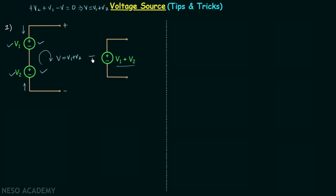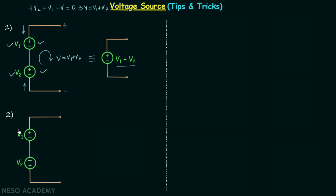This single source is the equivalent of the two-source arrangement. Whenever you solve a network with this kind of arrangement, you can replace it with the single equivalent source to simplify the circuit. Now moving to the second case — again we have two voltage sources, V1 and V2, connected in series but now with polarity plus-minus, minus-plus.